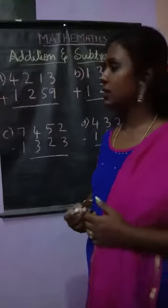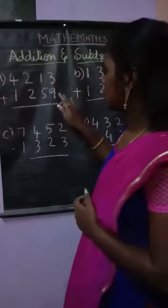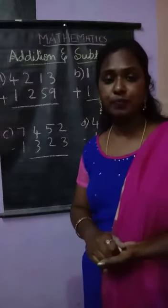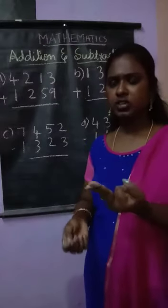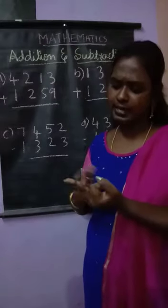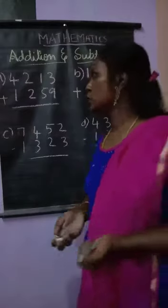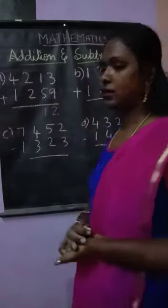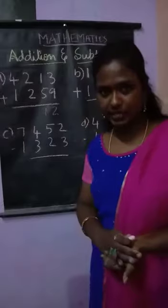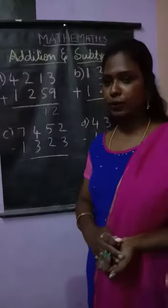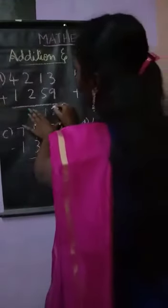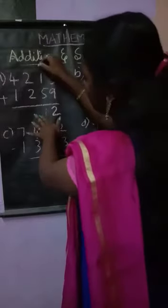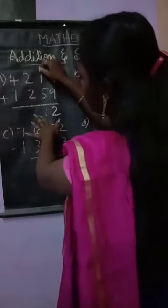Let us add the numbers. So 9 plus 3 — counting: 10, 11, 12. So we get 12. We cannot just write 12 directly here; that would be wrong. We should write 2 and give a carry of 1 to the next column.